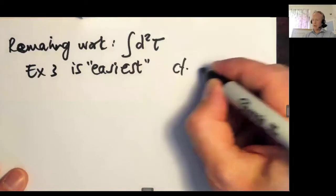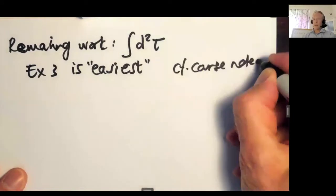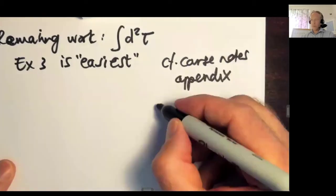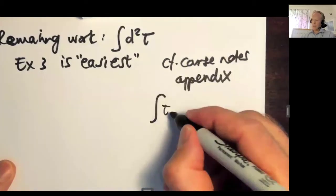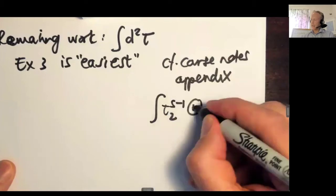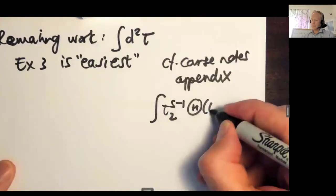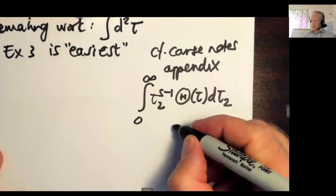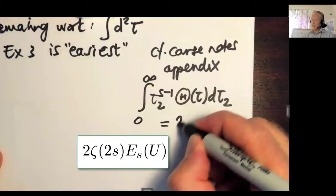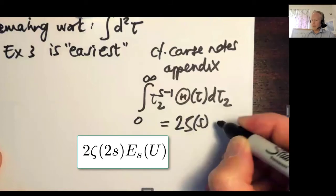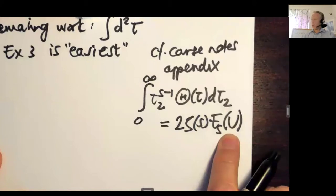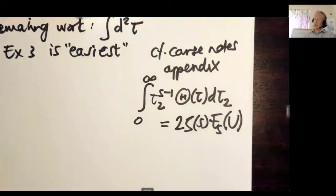So I talked a lot more about this in the course notes. In particular, I put an appendix where I explicitly compute the integral of tau 2 to some parameter s times this theta thing that I just wrote over tau 2 from 0 to infinity. If you do that, you get 2 times the Riemann zeta function times this polymorphic Eisenstein series we've been talking about of u.